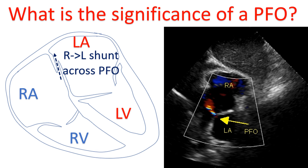PFO is short for patent foramen ovale. Usually, the foramen ovale closes soon after birth so that there is no communication between the two atria in most persons. But occasionally, a small opening may persist, and then it is called PFO. PFO is a valvular opening through the inter-atrial septum.